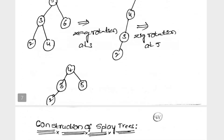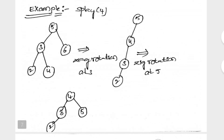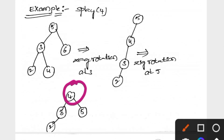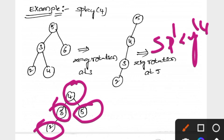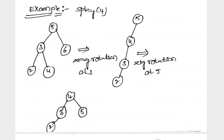The resulting tree will be like this: 4 is the root element, 5 is on the right side, and 3 and 2 are in the left direction. We are going to do the splaying of the target element with root element 4. This is the way we rotate elements in the Splay tree.